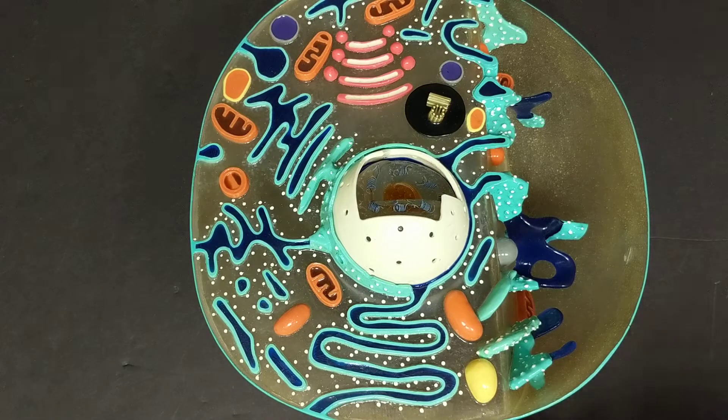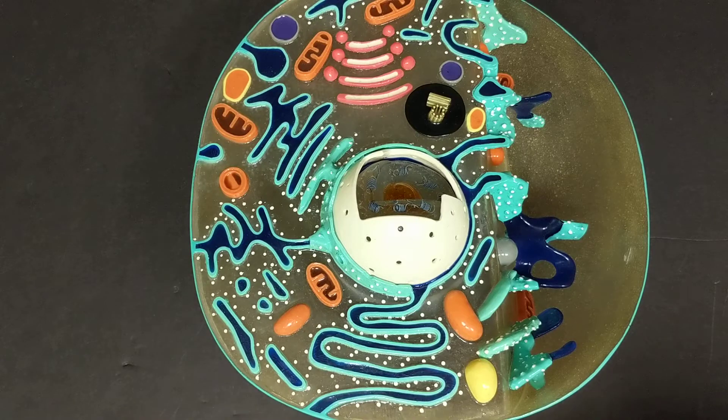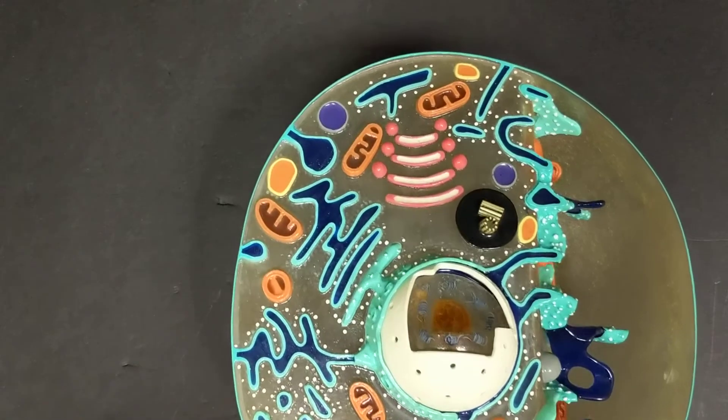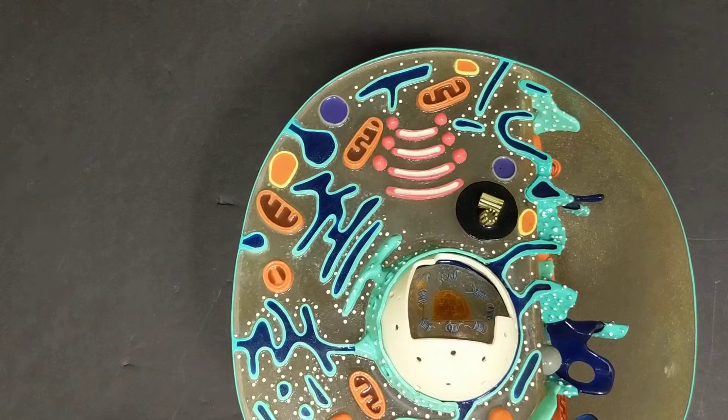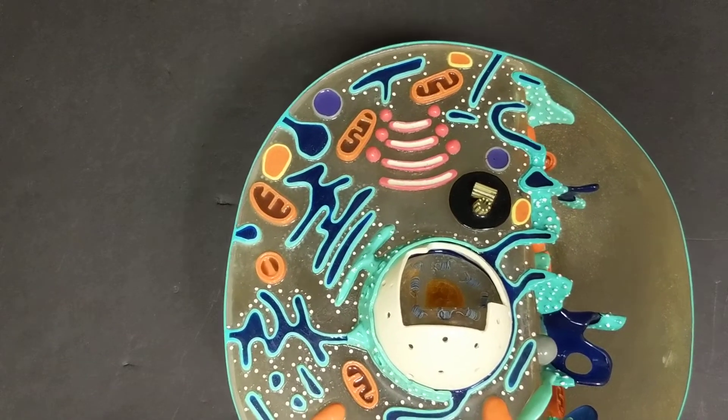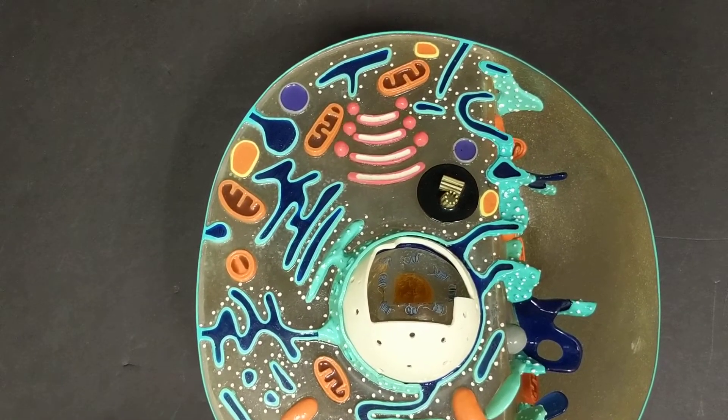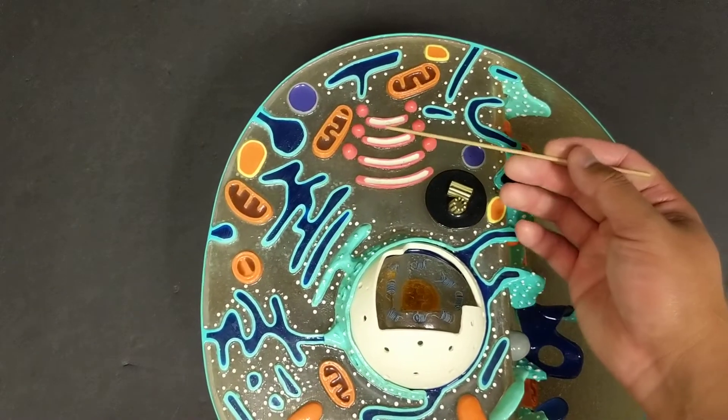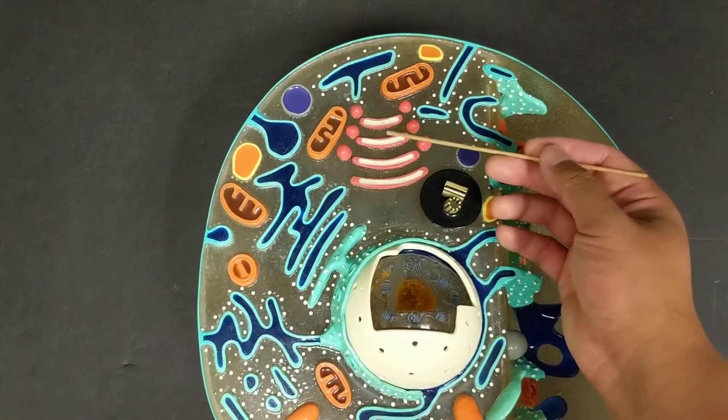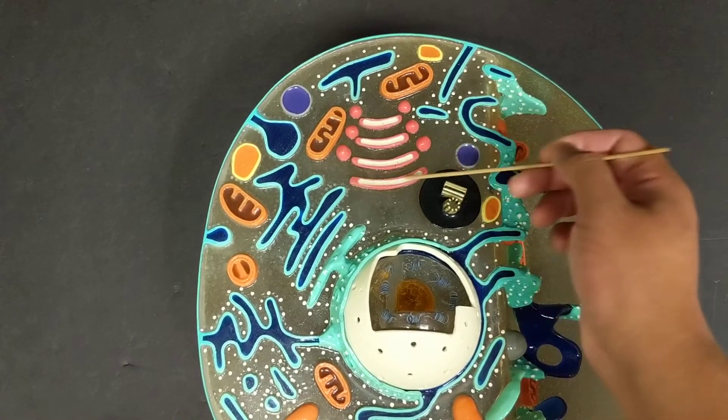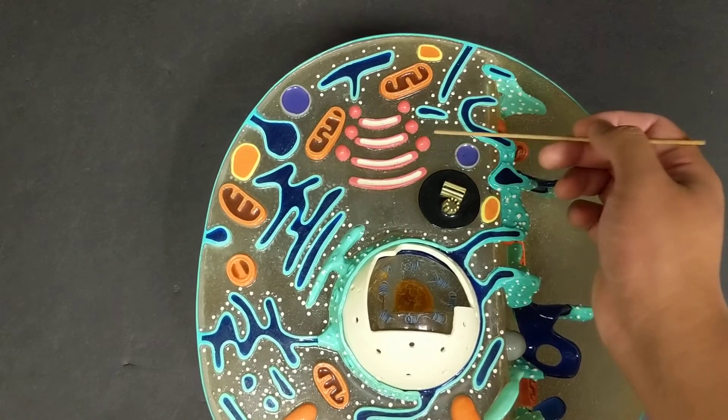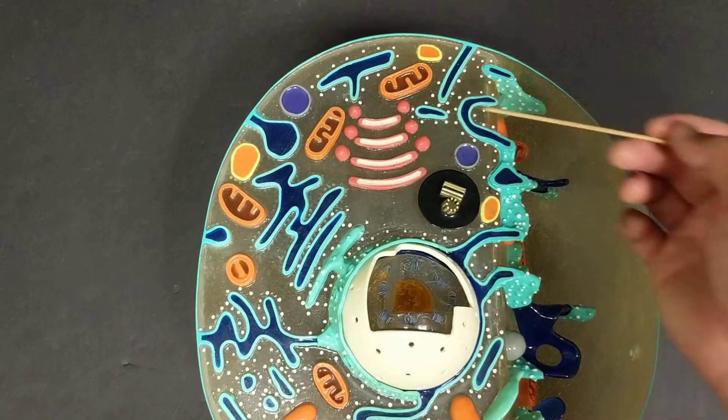Now for the Golgi apparatus, try to look for it really quickly before I point it out. Can you find the pancakes? Can you find the vesicles? In this case, I would look for the pancakes first but confirm with the vesicles. So this, although it looks different from the other model, this is the Golgi apparatus.